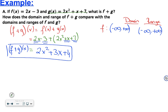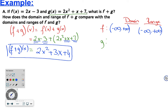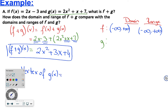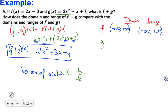Now for g(x): this is a quadratic function, so it has a vertex. To find the x-coordinate of the vertex, we use negative b over 2a. We know a equals 2, b equals 1, and c equals 7. Substituting gives x equals negative 1 over 4. That is the x-value of the vertex. The domain of g is also negative infinity to positive infinity.